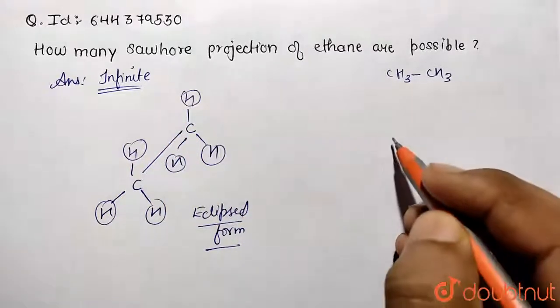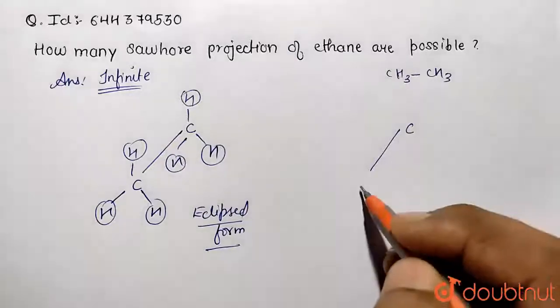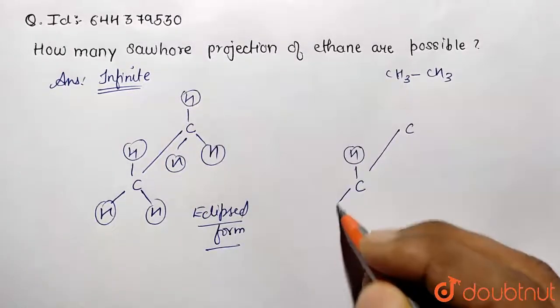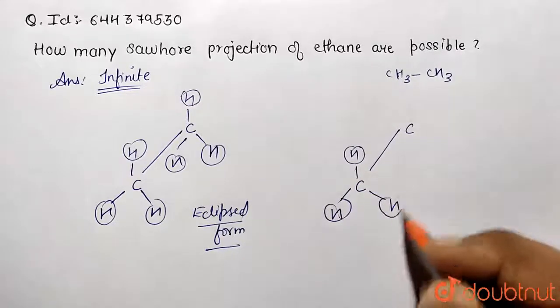Now if we are going to draw the staggered form, carbon-carbon bond is represented using slant height. And over here, this is H present here. This is also H. This is also H. Now what happens?